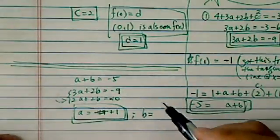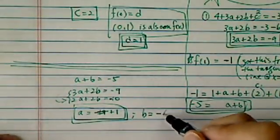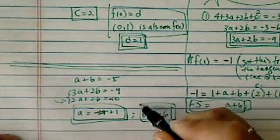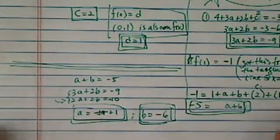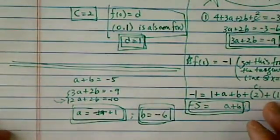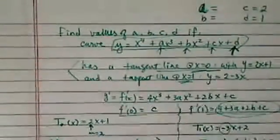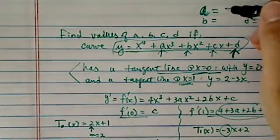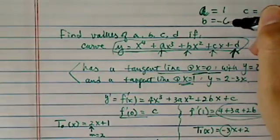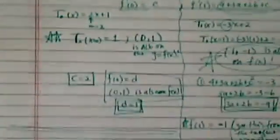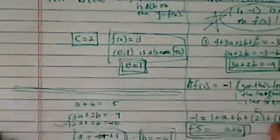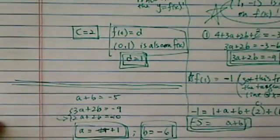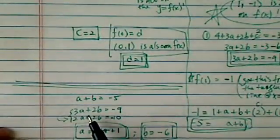If a equals plus 1, then b equals minus 6. So b equals -6. Let's write it on top. a equals 1, b equals -6. Let's double check we got everything.